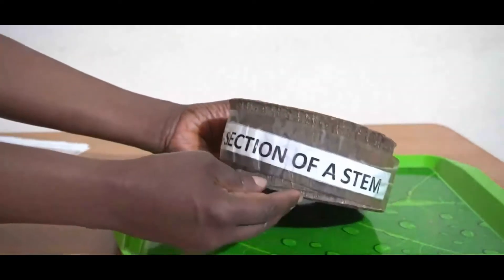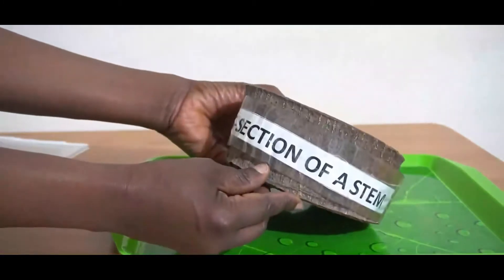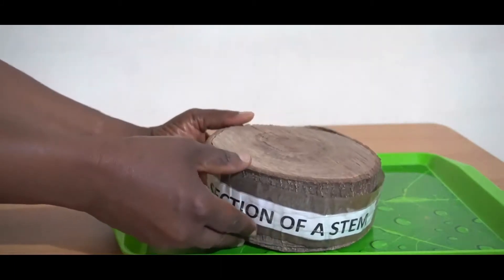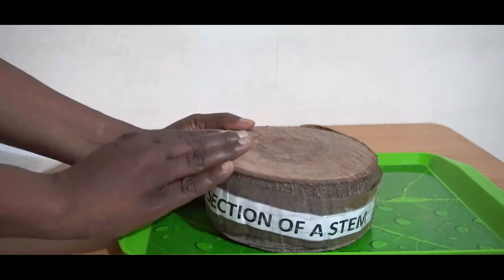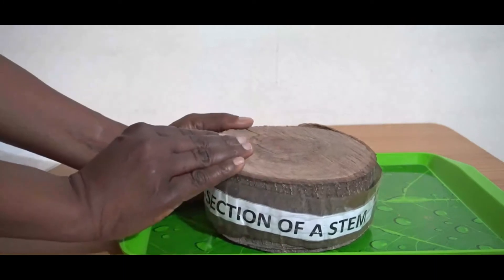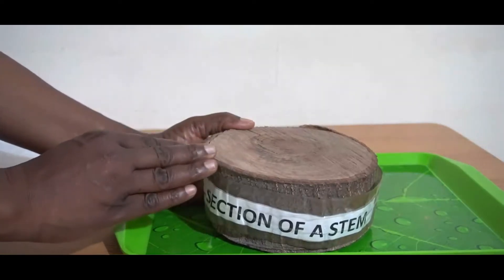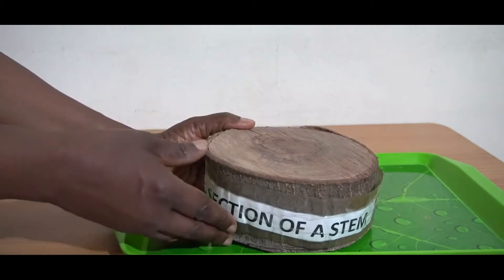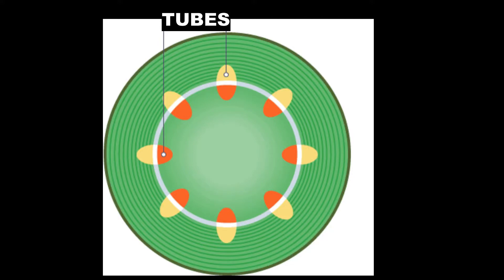Here I have a specimen of the cross section of a stem. We know that the leaves need water to make their food, and we know that it is the stem's job to take the water that is being collected by the roots up to the leaves. The water is being taken up in tubes inside the stem.